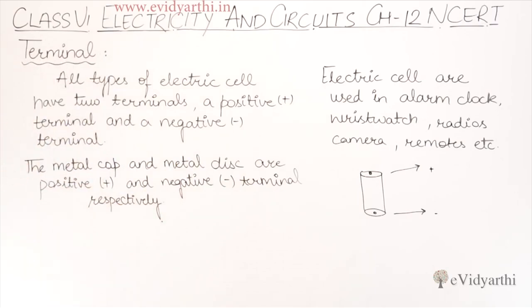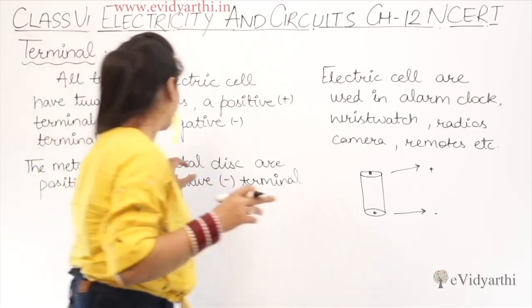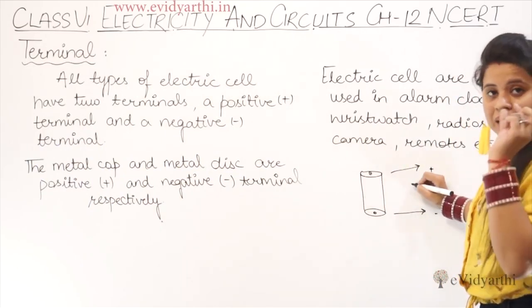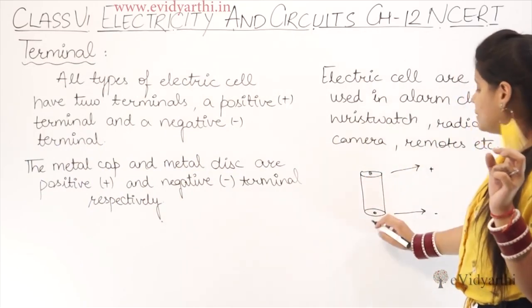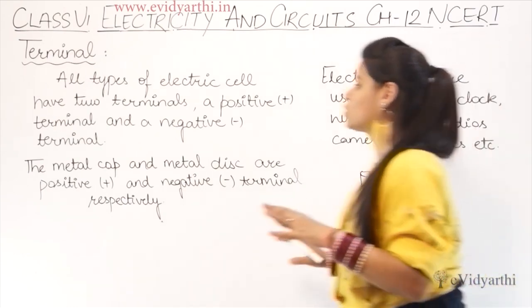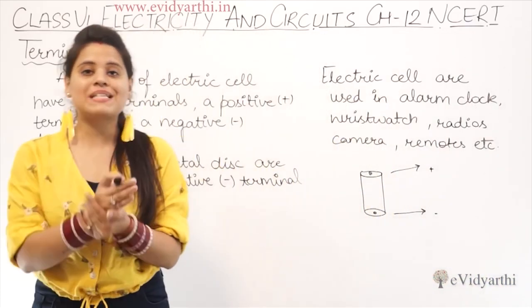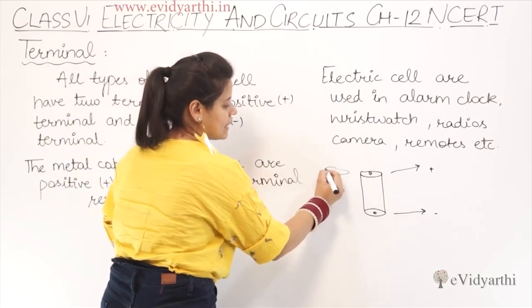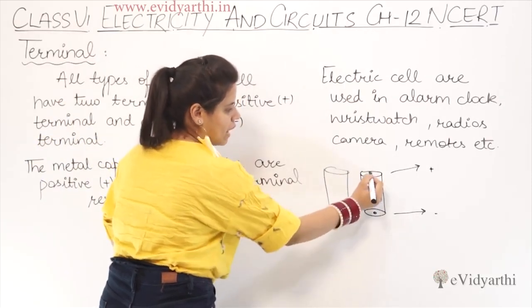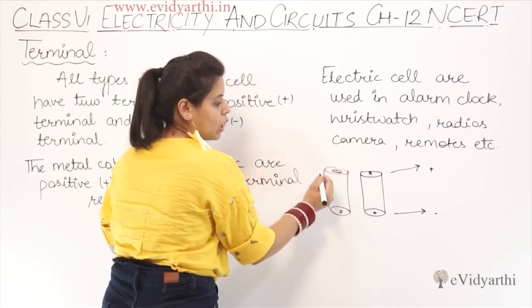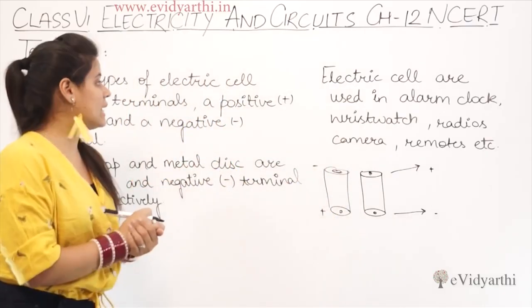The metal cap and metal disc are the positive and negative terminals respectively. The metal cap - the part that sticks out slightly - is the positive terminal. And the disc, the flat part, is our negative terminal - that means minus. Whenever we insert a cell into something, one cell goes one way, and the next cell is always inserted the opposite way. So if here the positive is on top, in the next one the positive will be at the bottom and the disc will be on top.